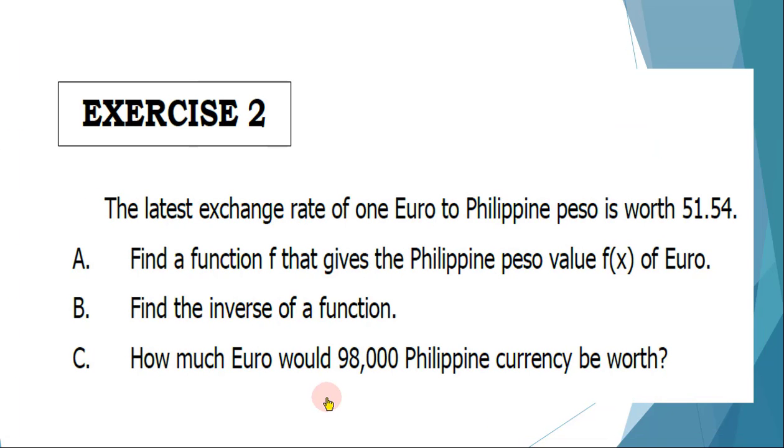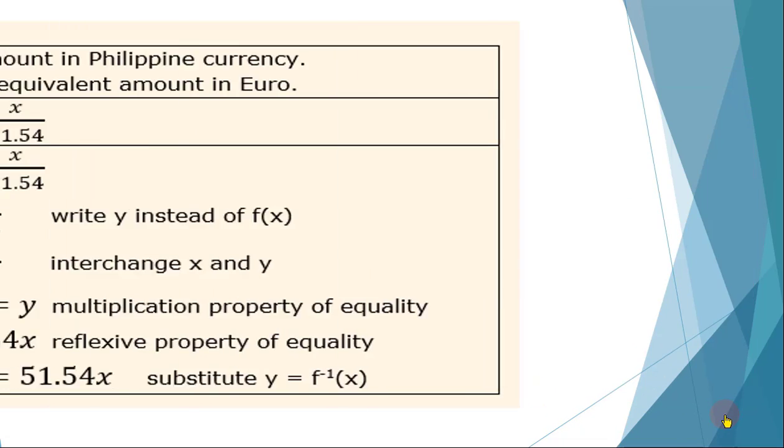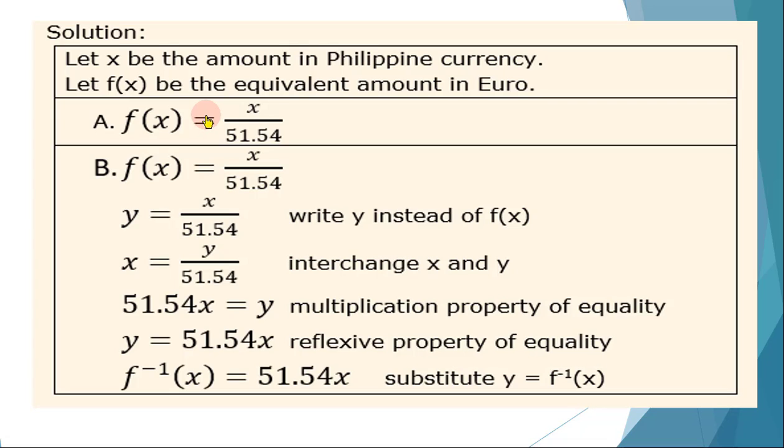Moving on to exercise number 2. Find the function f that gives the Philippine peso value f(x) of euro. Find the inverse of function. And for letter c, how much euro would 98,000 Philippine currency be worth? So for the solution, let x be the amount in the Philippine currency and f(x) be the equivalent amount in euro. So we have f(x) = x/51.54.